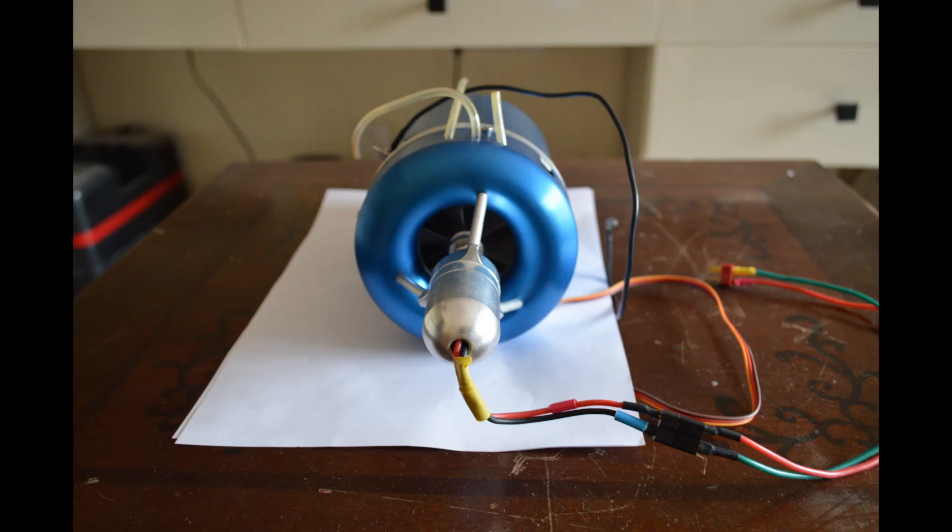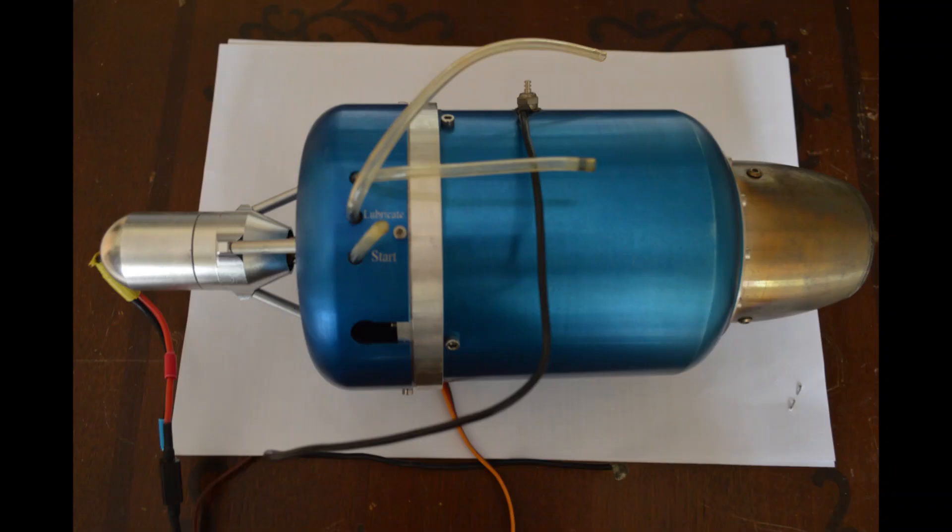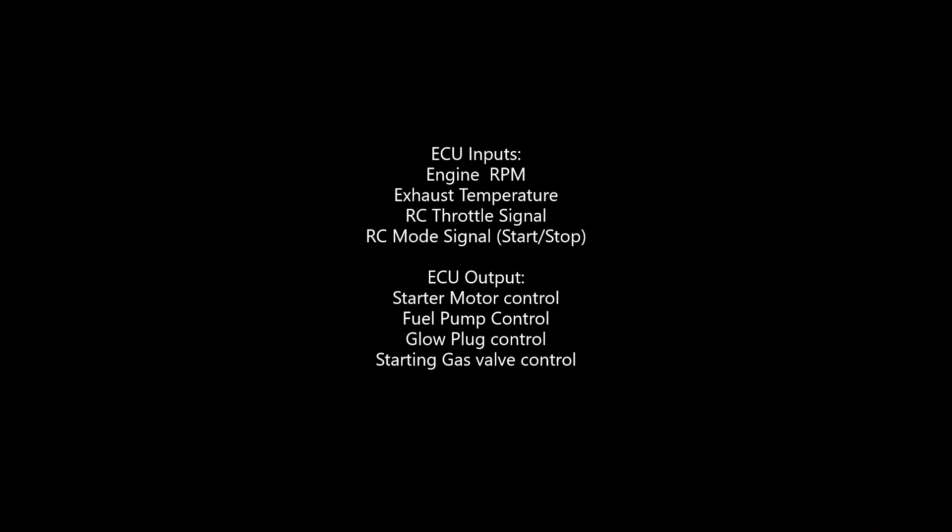When we talk about ECU, an ECU generally takes in four inputs and controls the engine by providing four outputs. The inputs that it takes is the engine RPM, the exhaust gas temperature, throttle input to control the speed of the engine, and potentially a mode input for starting and stopping the engine. For outputs it will provide the starter motor control, fuel pump control, glow plug control, and starting gas valve control.